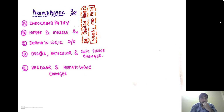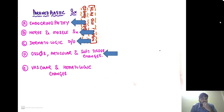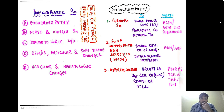Paraneoplastic syndrome is divided into five headings: endocrinopathy, nerve and muscle syndrome, dermatological disorders, osseous articular soft tissue changes, and vascular and hematological changes. With the first heading — endocrinopathy — and the first example, Cushing syndrome, I am going to explain what a paraneoplastic syndrome is.